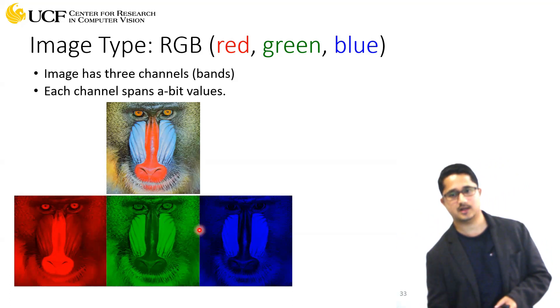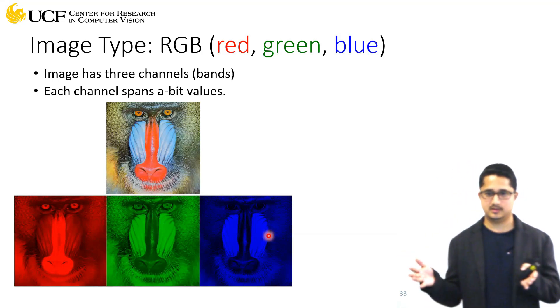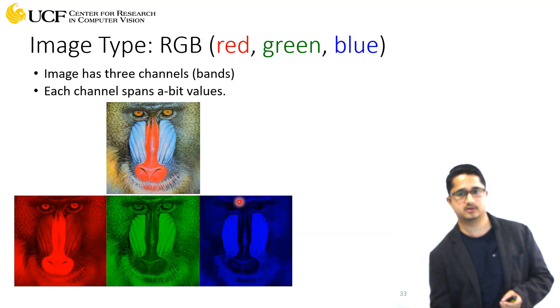This is for green and this is for blue. An RGB image is nothing but three different channels combined together to form the RGB image.